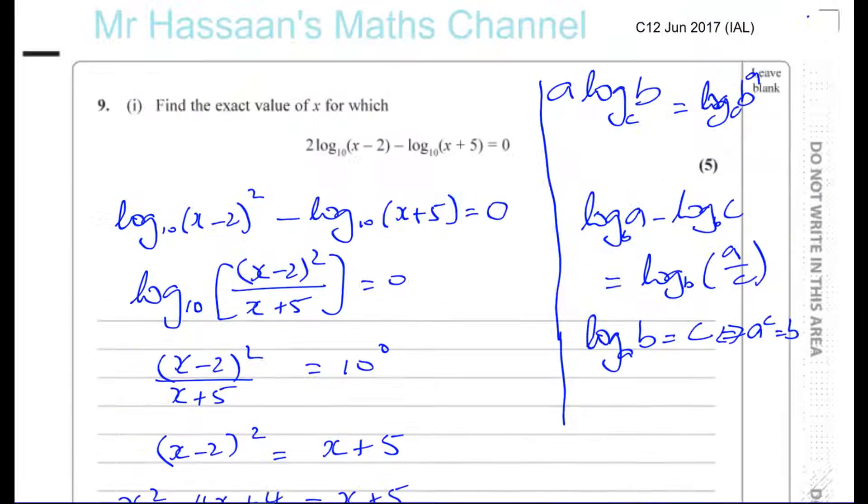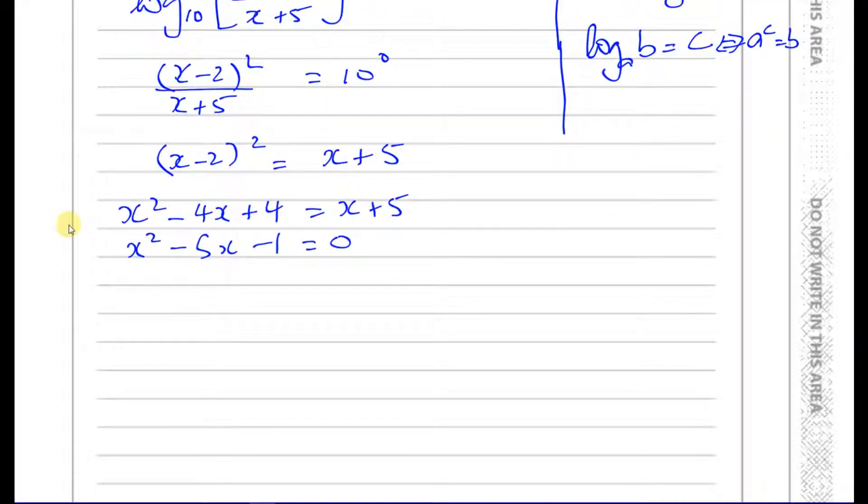And the question says find the exact value of, so that's giving us an idea that we're going to have a surd value. So we're going to have x squared minus 5x equals 1. I'm going to complete the square here. So I'll have (x minus 5/2) squared minus the square of 5/2, which is 25/4, equals 1.